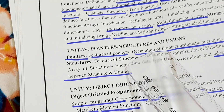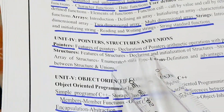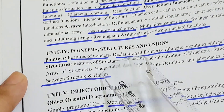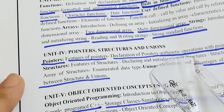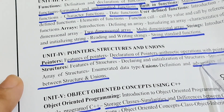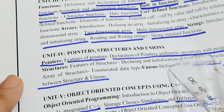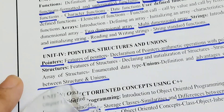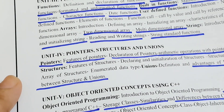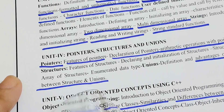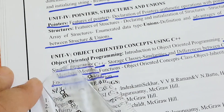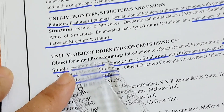In unit four — pointers, structures, and unions — the important topics are: features of pointers, declaration of pointers, and arithmetic operations with pointers, which are very most important for long answers. Also cover advantages of unions and comparison between structures and unions. Then move on to unit five: object-oriented concepts using C++.